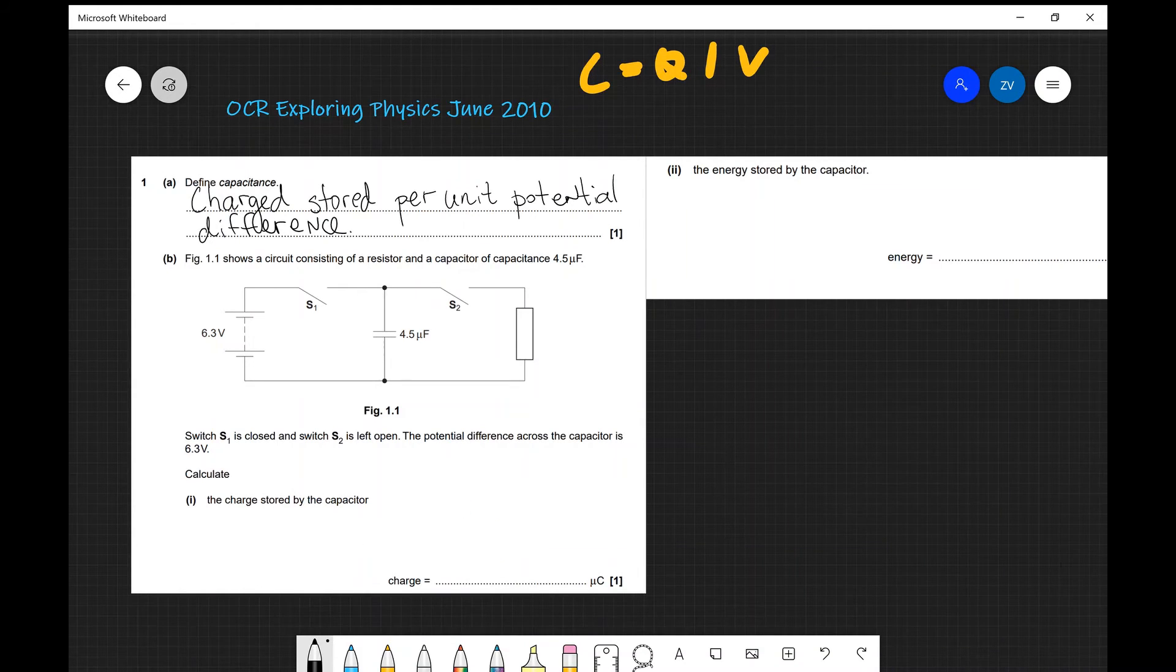Okay, let's have a go through part B. Figure 1.1 shows a circuit consisting of a resistor and a capacitor of capacitance 4.5 microfarads. Close the switch, S1, and then you open up S2. The potential difference across the capacitor is 6.3 volts. Calculate the charge stored by the capacitor. Now, because we know that Q is equal to CV, so we know that Q is equal to CV.